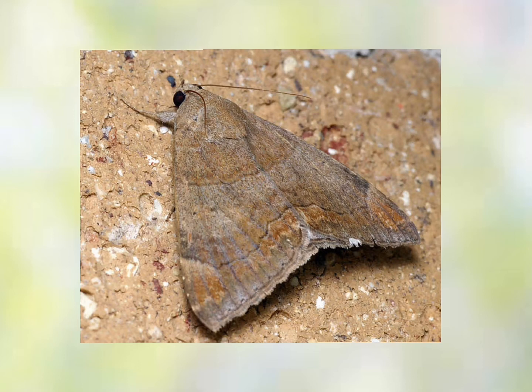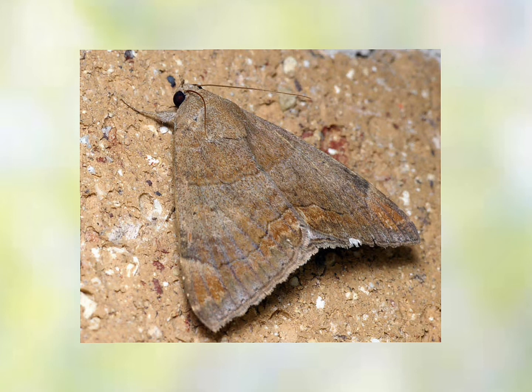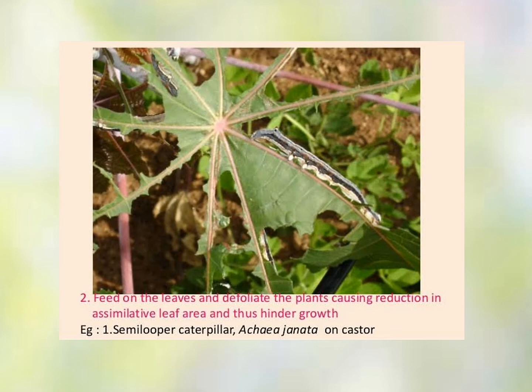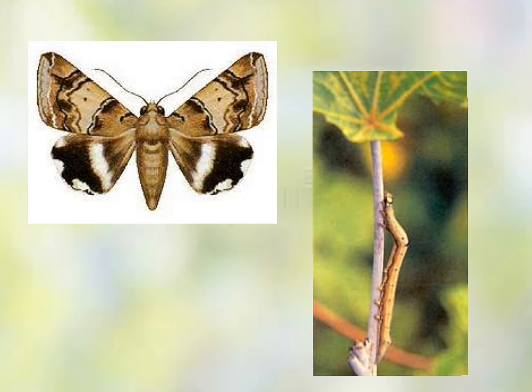The damage is caused by both the moth and the caterpillar. The caterpillar feeds only on castor leaves, feeding inward from the edges and leaving behind only the midrib and stalk. Damage is maximum in August, September, and October. The adult of the species are fruit-sucking moths and cause serious damage to citrus crops. Mostly the adult moth causes the damage symptoms.